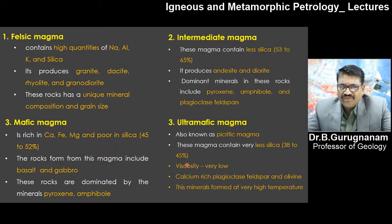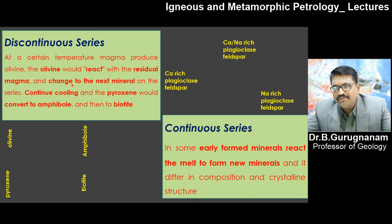Because of the low silica content, viscosity will be very low in ultramafic magma. Calcium-rich plagioclase feldspar and olivine are the end products of this magma. These minerals form at very high temperature. This relationship is explained by the great scientist Norman Levy Bowen, NL Bowen.